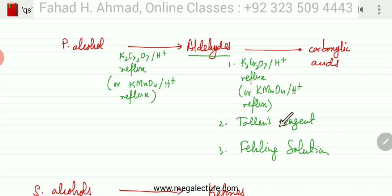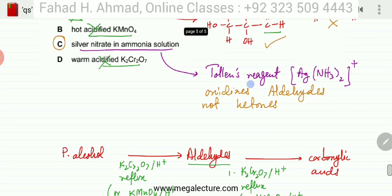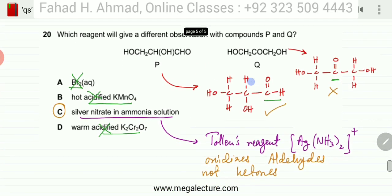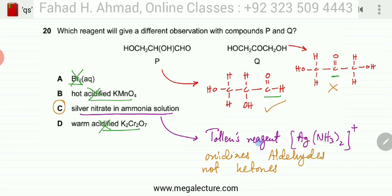And specifically aldehydes, Tollens reagent was very unique. So for this question, Tollens reagent was the answer which was silver nitrate in ammonia solution. So option C is the correct option for this question.